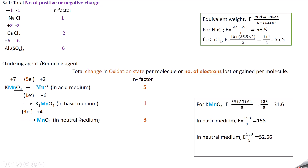Equivalent weight calculations for KMnO₄: molar mass = 39 + 55 + 4×16 = 158. In acid medium (N factor = 5): 158/5 = 31.6. In basic medium (N factor = 1): 158/1 = 158. In neutral medium (N factor = 3): 158/3 = 52.66.